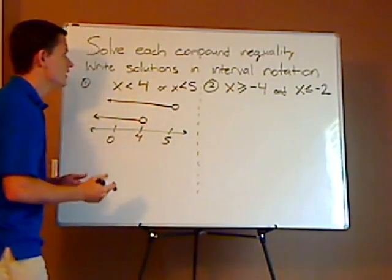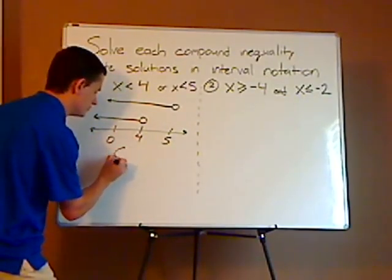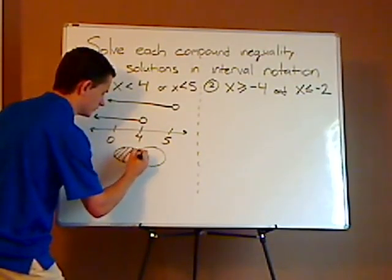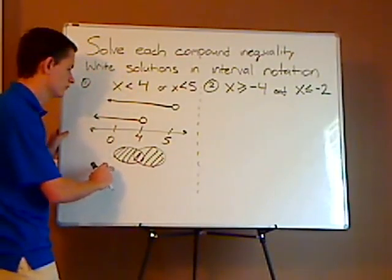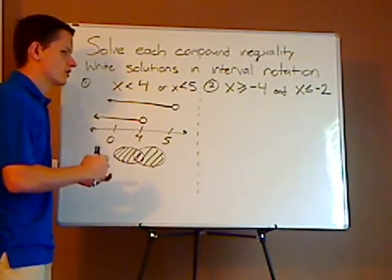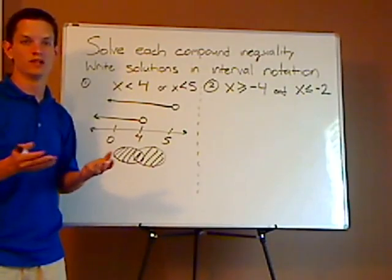Now, as far as an or statement is concerned, it's a union, so with a union, it's everything. Right? Visually speaking, with two Venn diagrams, it's everything. So, it's either where both of them are true, or just one of them is true.